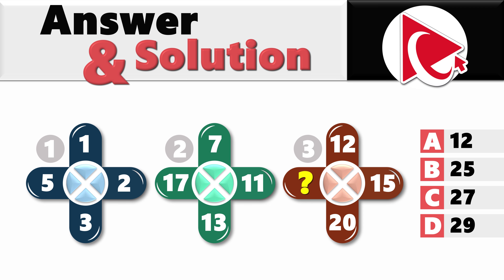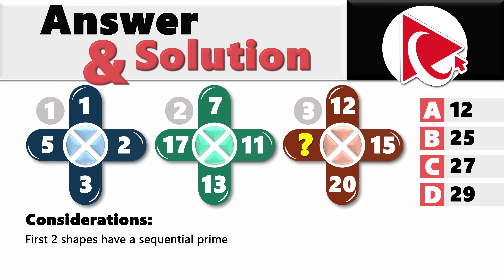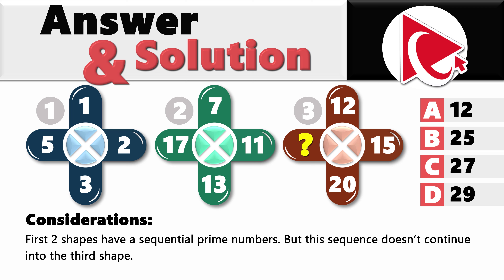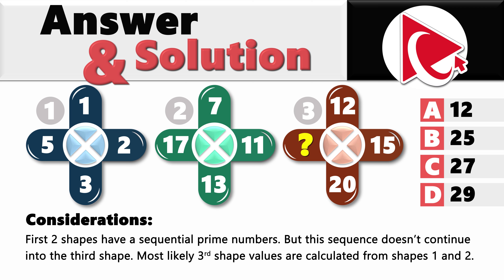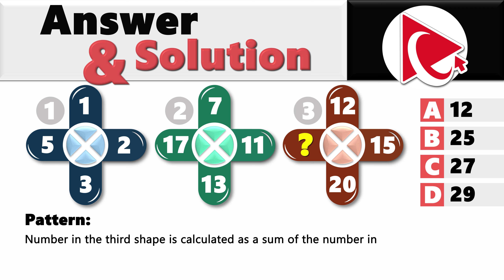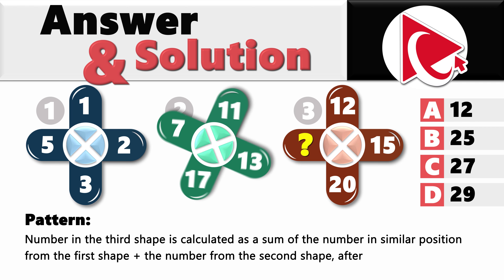The first thing that comes to mind when looking at the numbers in all shapes is that we're dealing with prime numbers. In fact, the first two shapes have sequential prime numbers: 1, 2, 3, and 5, and then continuing 7, 11, 13, and 17. But then this pattern doesn't continue in the third shape, which means that the third shape values are most likely calculated based on the values in shapes 1 and 2. The number in the third shape is calculated as a sum of numbers in a similar position from the first shape, plus the number from the second shape after a 90-degree rotation.